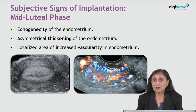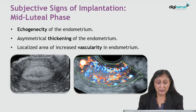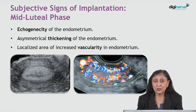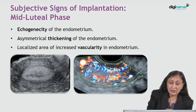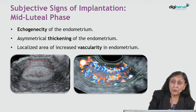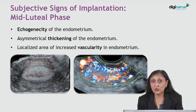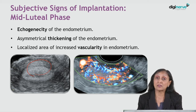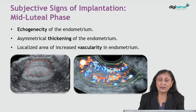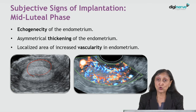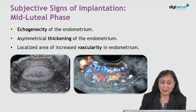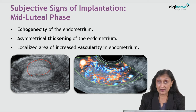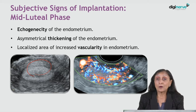The subjective signs of implantation can be seen in the uterus. There is asymmetrical thickening of the endometrium, asymmetrical hyperechogenicity in the same area which is asymmetrically thick, and it is this part of the endometrium which also shows increased vascularity — a localized area which is the site where the embryo is implanting.